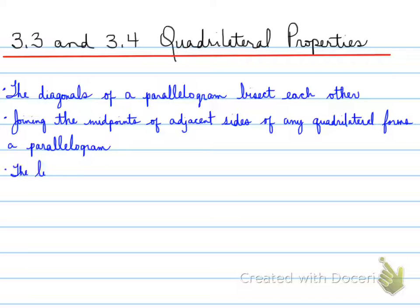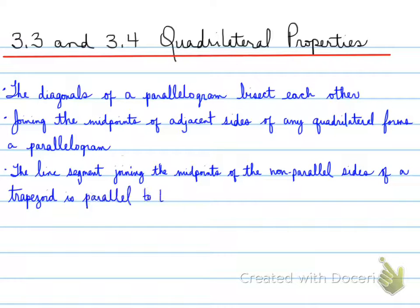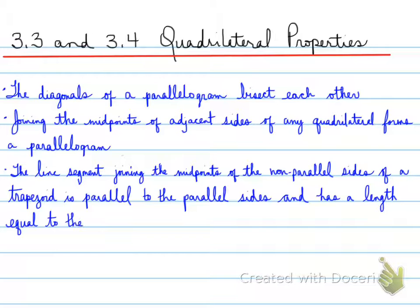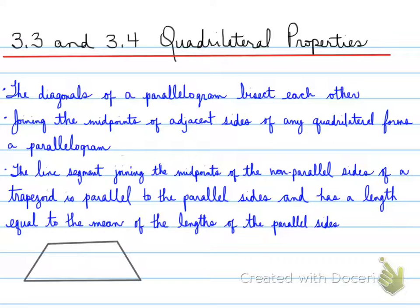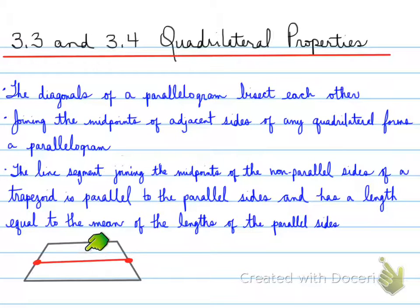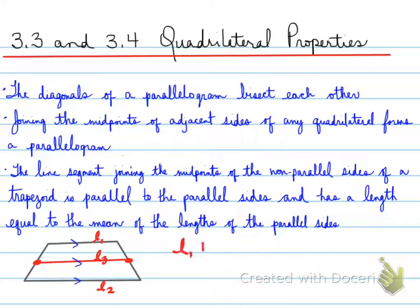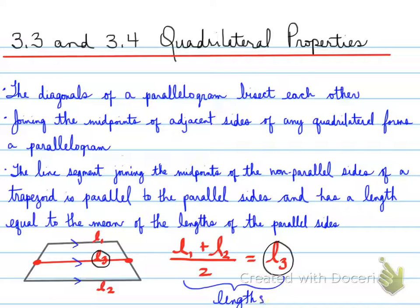The line segment joining the midpoints of the non-parallel sides of a trapezoid is parallel to the parallel sides and has a length equal to the mean of the lengths of the parallel sides. So for a trapezoid, we take the midpoints of the non-parallel sides and connect them. This line is parallel to the two parallel sides, and its length equals the average of those two sides. If I define the length of side one and two, add them and divide by two, that equals the length of line three.